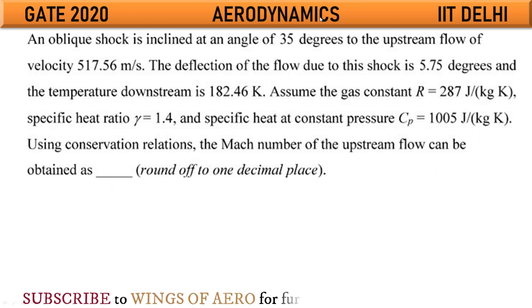An oblique shock wave is inclined at an angle of 35 degrees to the upstream flow of velocity 517.56 meter per second. The deflection of the flow due to this shock is 5.75 degrees and the temperature downstream is 182.46 Kelvin. Assume the gas constant R equals 287 Joule per kg Kelvin, specific heat ratio gamma equals 1.4, and specific heat at constant pressure Cp is 1005 Joule per kg Kelvin.